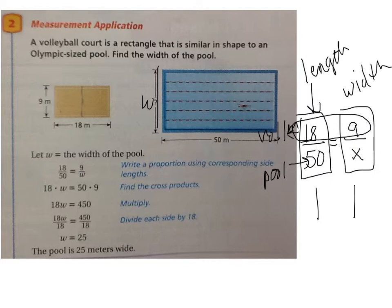Otherwise, it'll be wrong. And then you do cross-multiply. 50 times 9 is 450 divided by 18. And you get 25. So, therefore, to answer the question, you would say the pool is 25 meters wide. Do you see how you take your known lengths to create a proportion to find an unknown length?